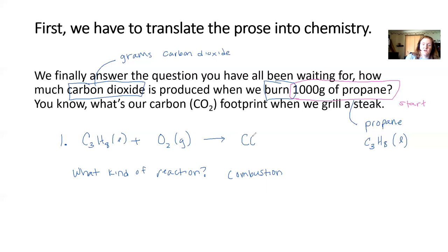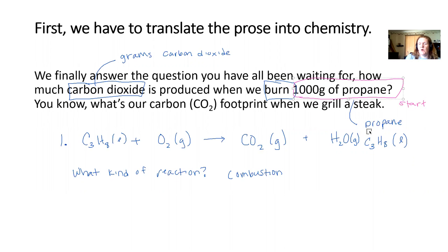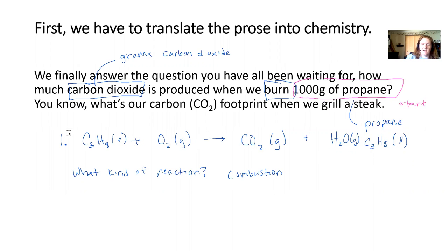Combustions of hydrocarbons — things made of hydrogen and carbon — always produce CO2 gas and water. So now we have the basic bare-bones picture of what's happening: we kind of know which chemicals are involved. The next step is to take that and balance the chemical reaction.